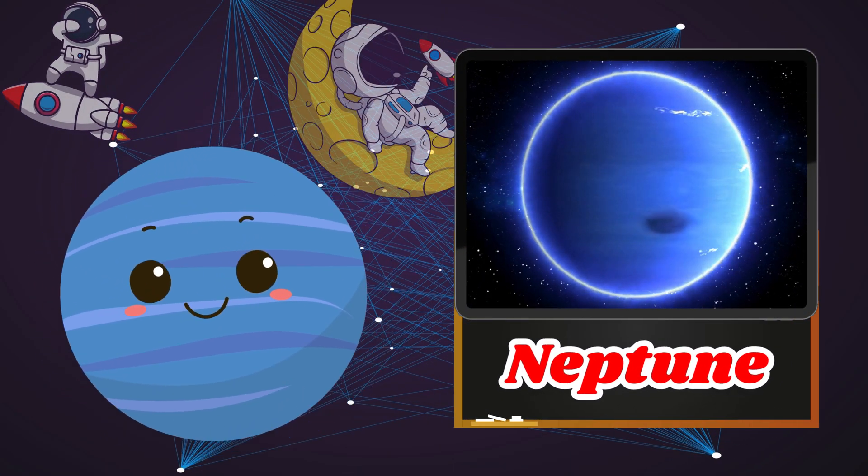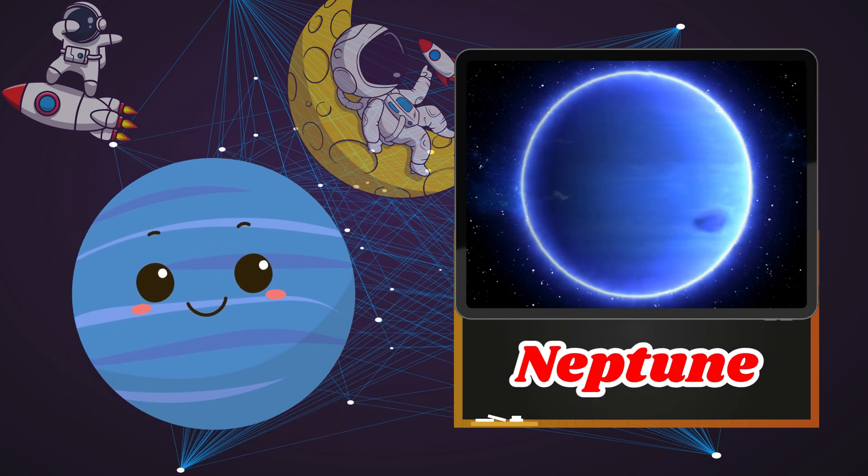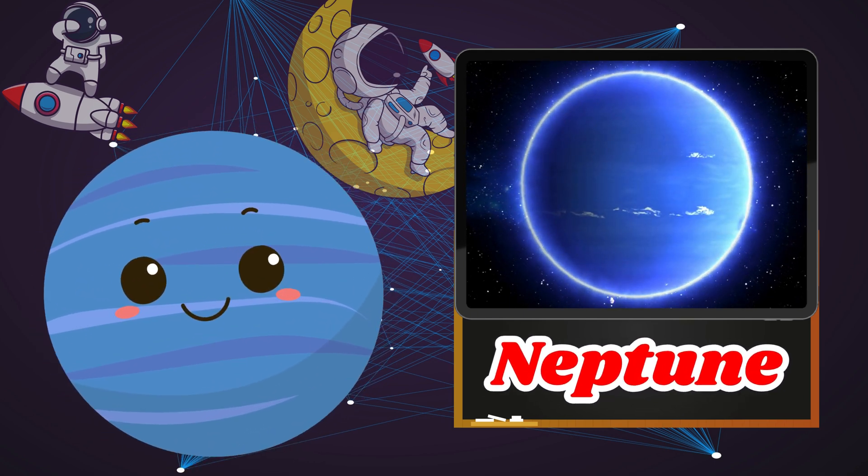Neptune is the farthest planet from the Sun. It is a deep blue color and has strong winds.